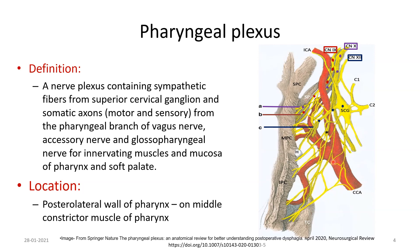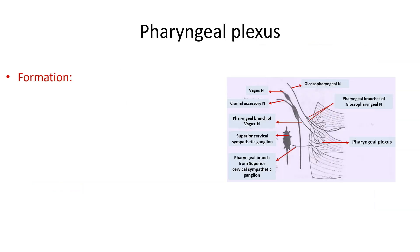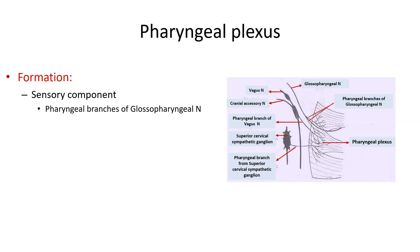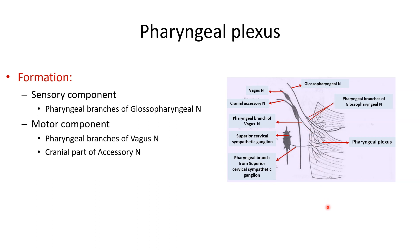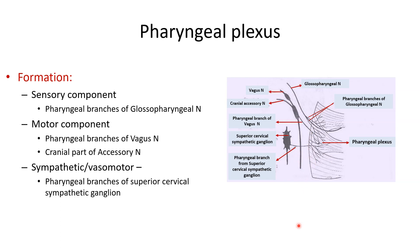Regarding the formation of the pharyngeal plexus: it has a sensory component contributed by the pharyngeal branches of the glossopharyngeal nerve; a motor component contributed by the pharyngeal branches of the vagus nerve and the cranial part of the accessory nerve joining it; and sympathetic vasomotor fibers derived from the superior cervical sympathetic ganglion, with the pharyngeal branch visible in the picture.